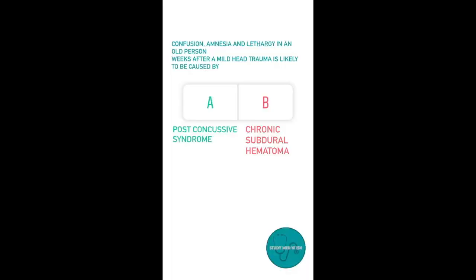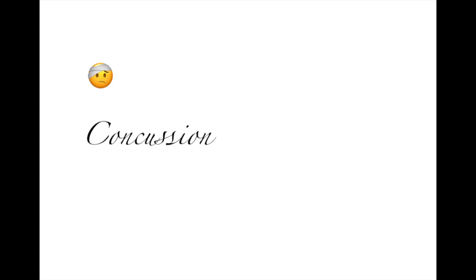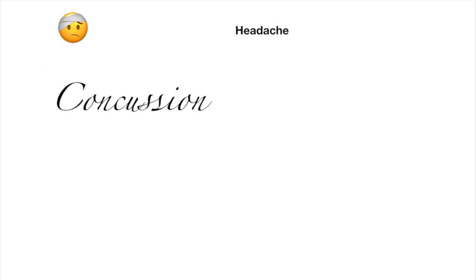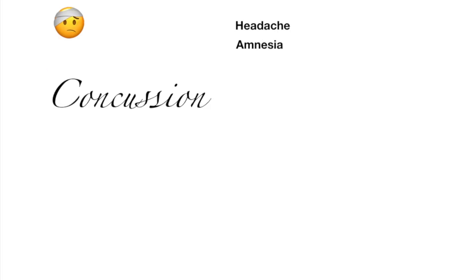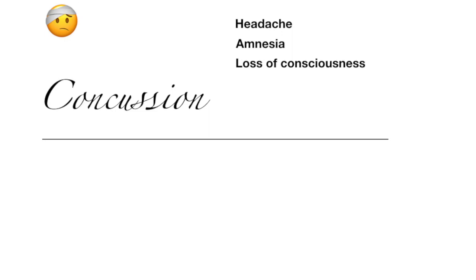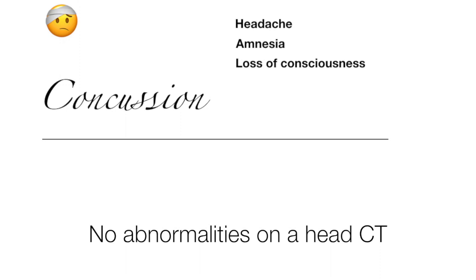Question 2: Confusion, amnesia, and lethargy in an old person weeks after a mild head trauma is likely due to? Option A, post-concussive syndrome. Option B, chronic subdural hematoma. The answer is post-concussive syndrome. A concussion is basically a mild traumatic brain injury. Patients would have symptoms of headache, amnesia, and might even lose consciousness. What makes this different from other traumatic brain injuries is that there is no abnormality seen on a head CT.